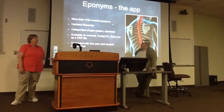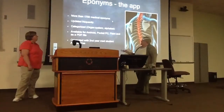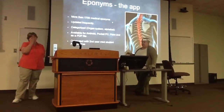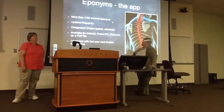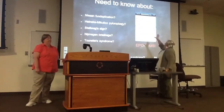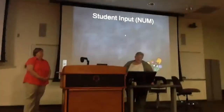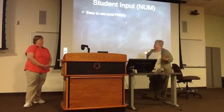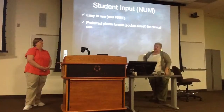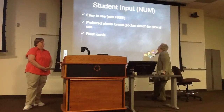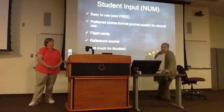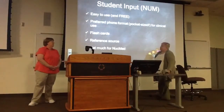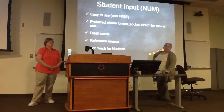It's categorized pretty nicely — either alphabetically or by systems like cardiac, radiology, or endocrine. There's also a random category. You can get it on lots of different formats: Android, Pocket PC, Palm, iPhone and iPad, or even as a PDF file. So no matter what kind of user you are, you can probably access the Eponyms app. The students in nuclear medicine thought it was pretty easy to use, especially loaded on their iPhones since they all have smartphones. They liked the phone format and the fact that it's almost like a flash card — you can test yourself. It's a nice reference source. The only problem was there's not much in it specifically for nuclear medicine, but there were a few things they could use.